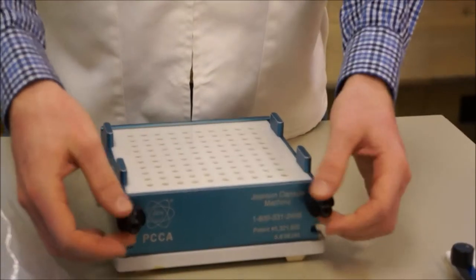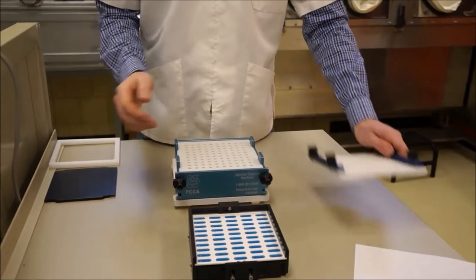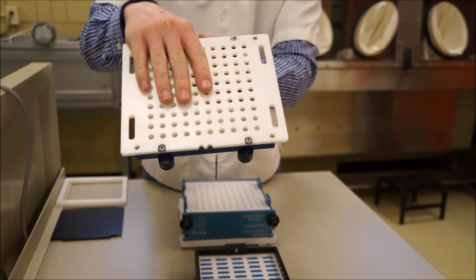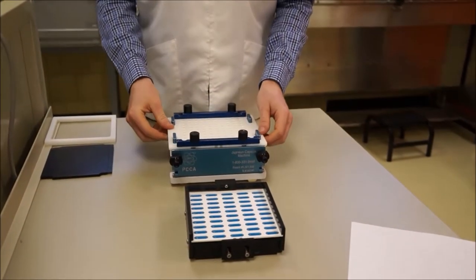You set your capsule machine, lock it in kind of loosely, and this is the top plate I was just telling you about. As you can see, there are two notches. The capsule machine does a hundred at a time.